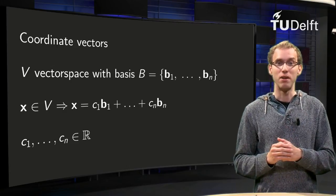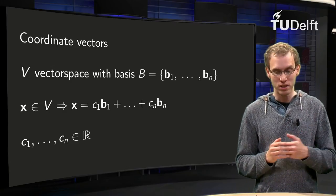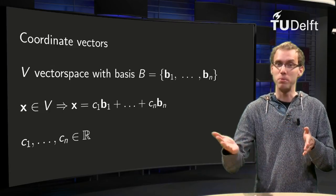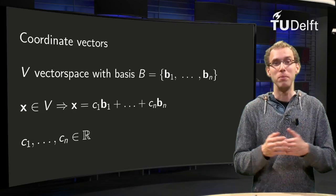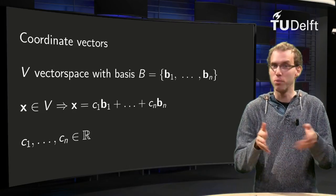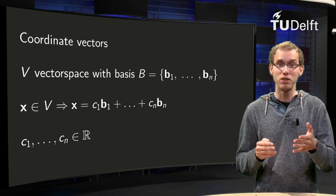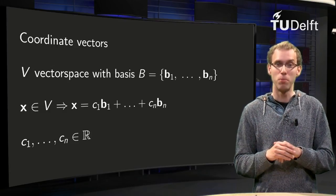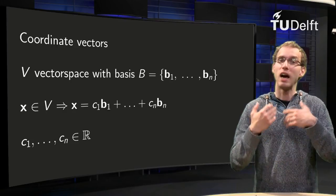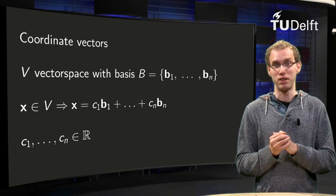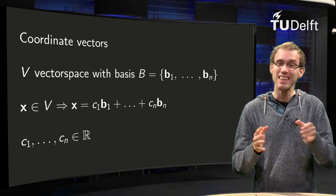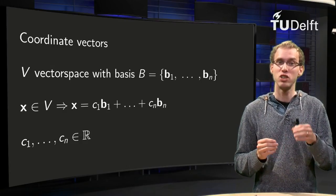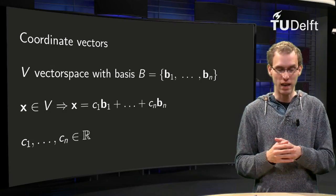Suppose we have some vector space V and some basis B consisting of vectors b1 up to bn. V may be some nasty vector space with polynomials or whatever, so those basis vectors b1 up to bn will be some nasty vectors, some polynomials. Suppose I have some x in my vector space V, then I can write this x in terms of my basis vectors in a unique way with weights c1 up to cn.